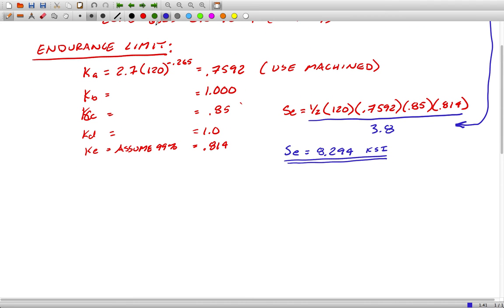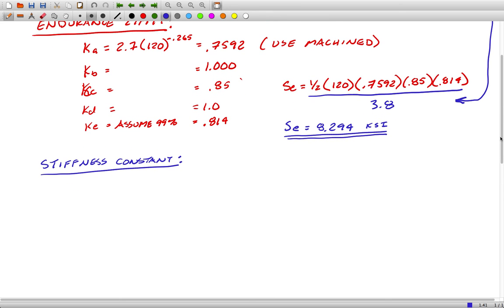The next thing I'm going to do is the stiffness constant. Now, what I'm going to do here is we know that C is KB over KB plus KM.